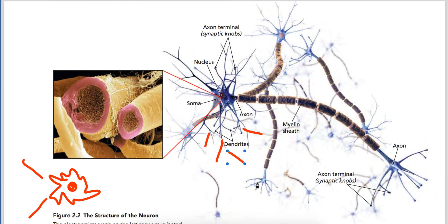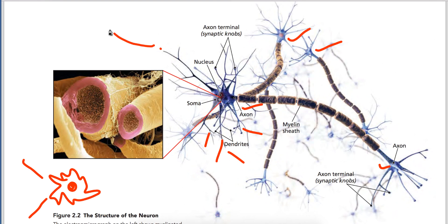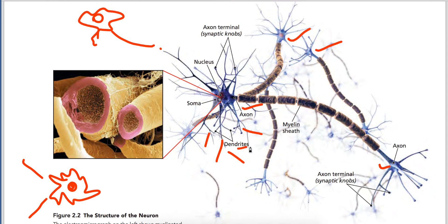These branches are in every neuron. In the body, there are countless neurons. There are small branches that connect one neuron to the other. Here one neuron ends and the branch connects to the next neuron. These branches are called dendrites.